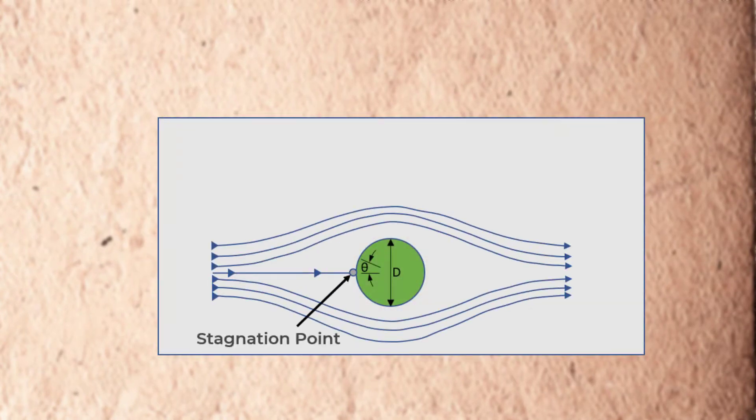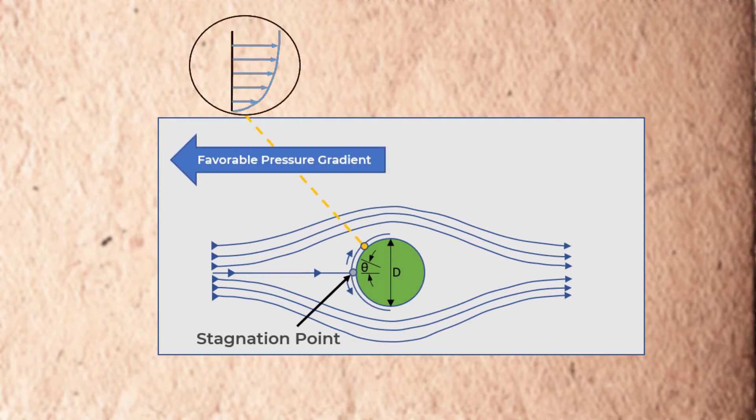As the fluid flow hits the cylinder, it comes to a complete stop at a location referred to as the stagnation point. At this location, the velocity of the flow is zero, and consequently, according to Bernoulli's principle, the pressure is maximum. Due to a favorable pressure gradient, the flow starts to accelerate and a boundary layer begins to form on the wall as the flow turns around the cylinder.